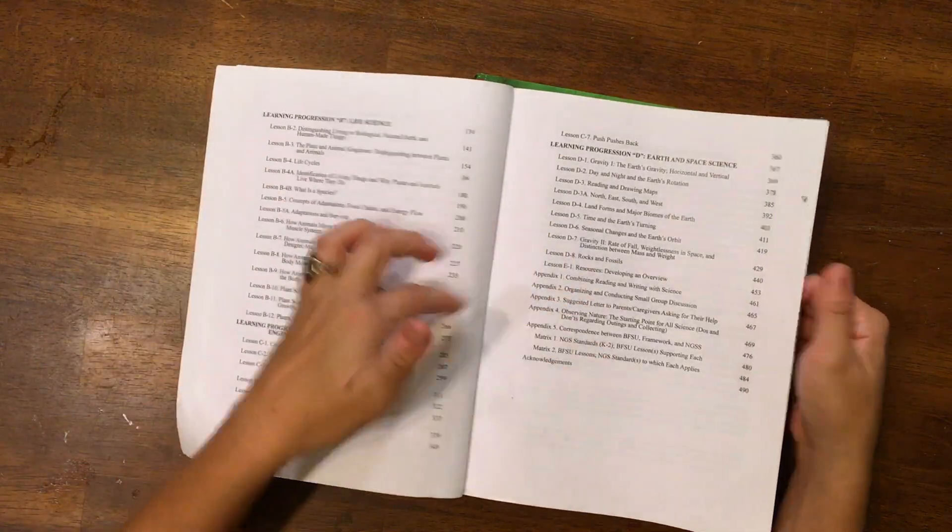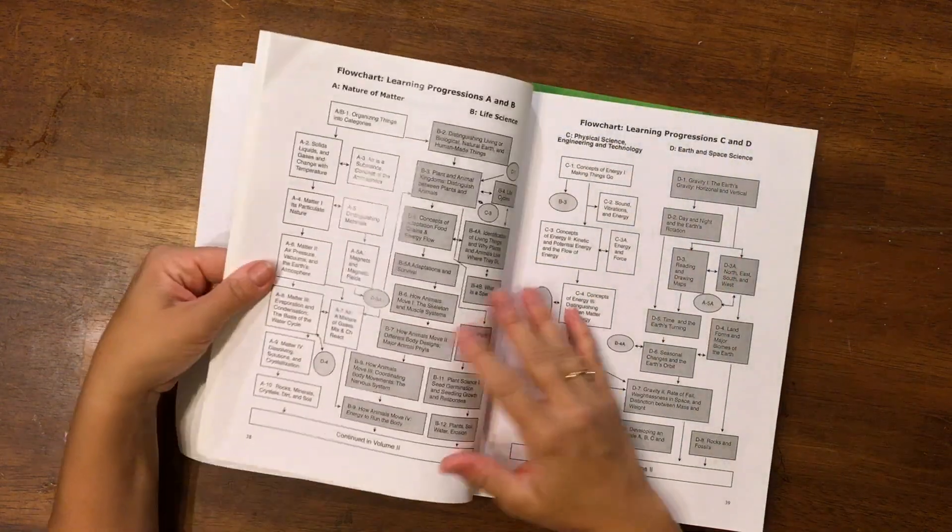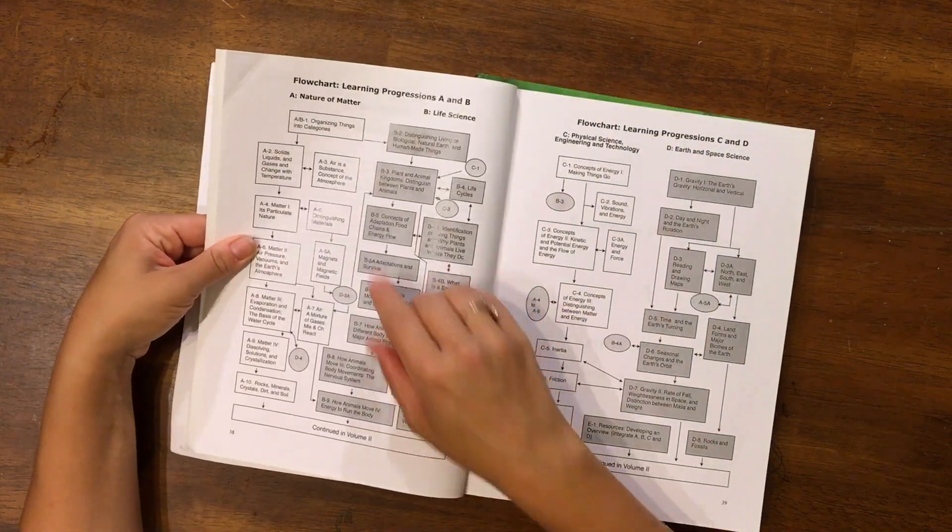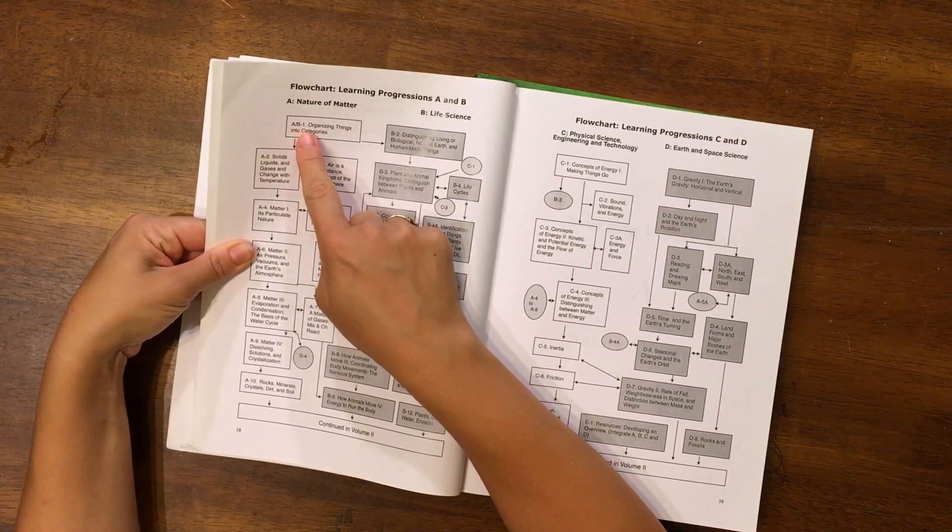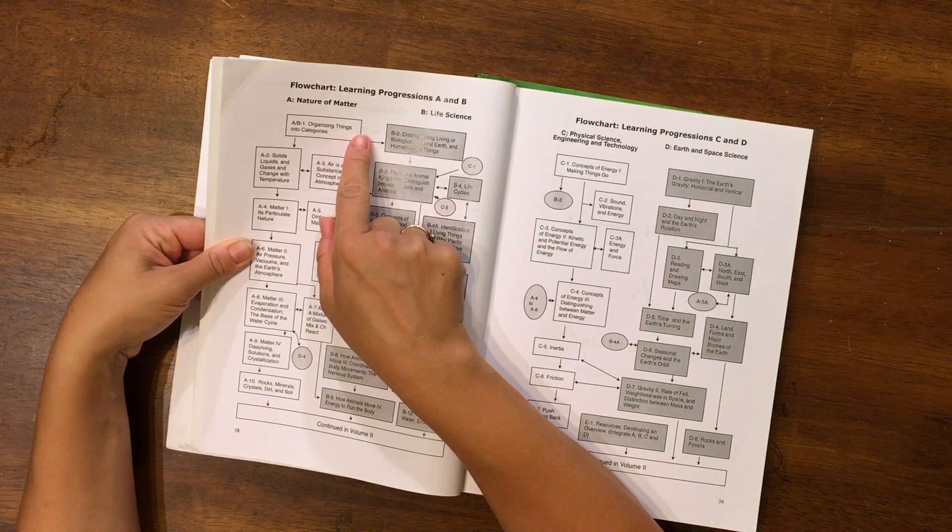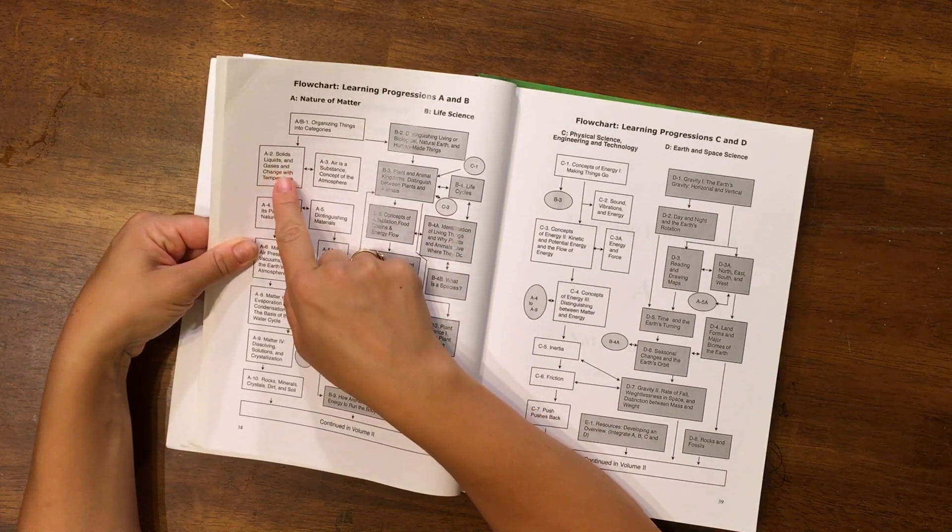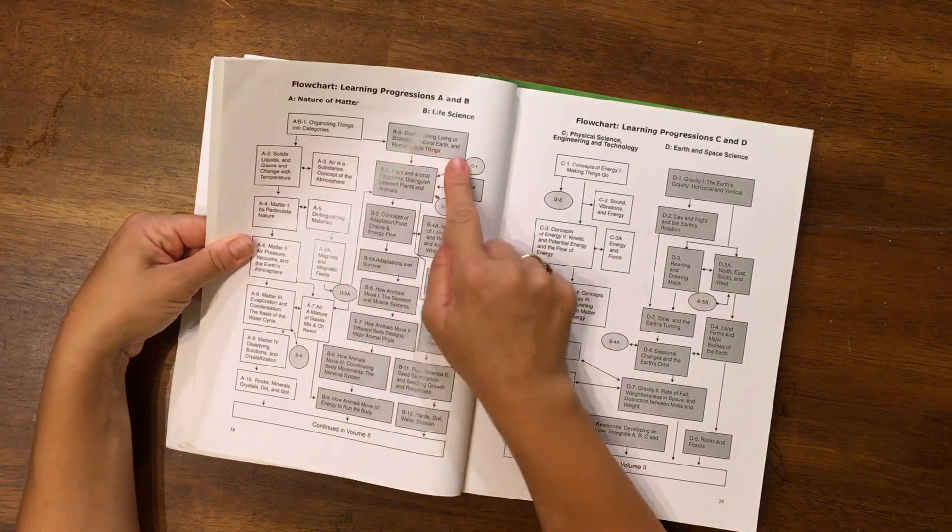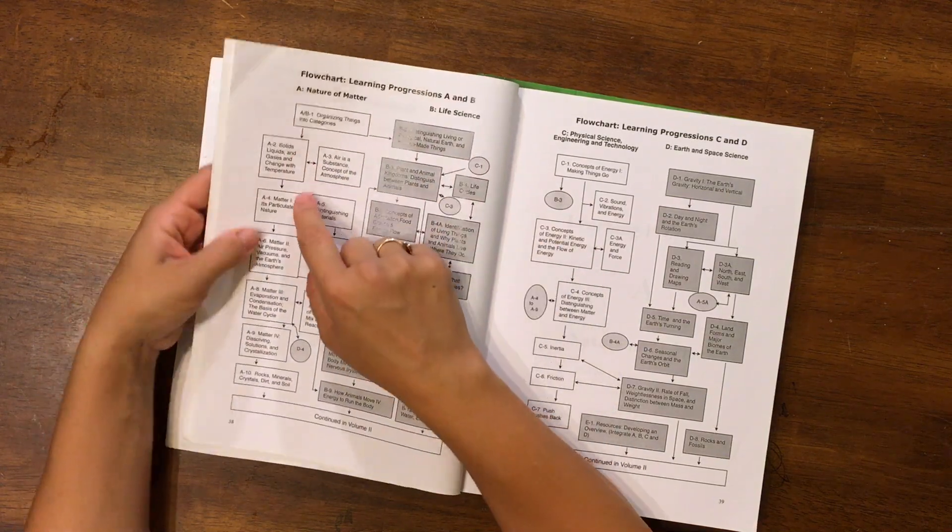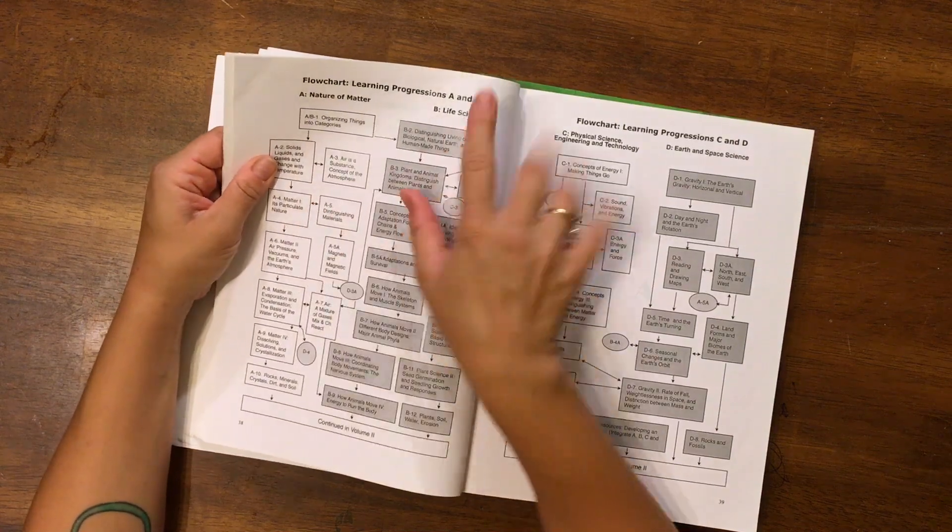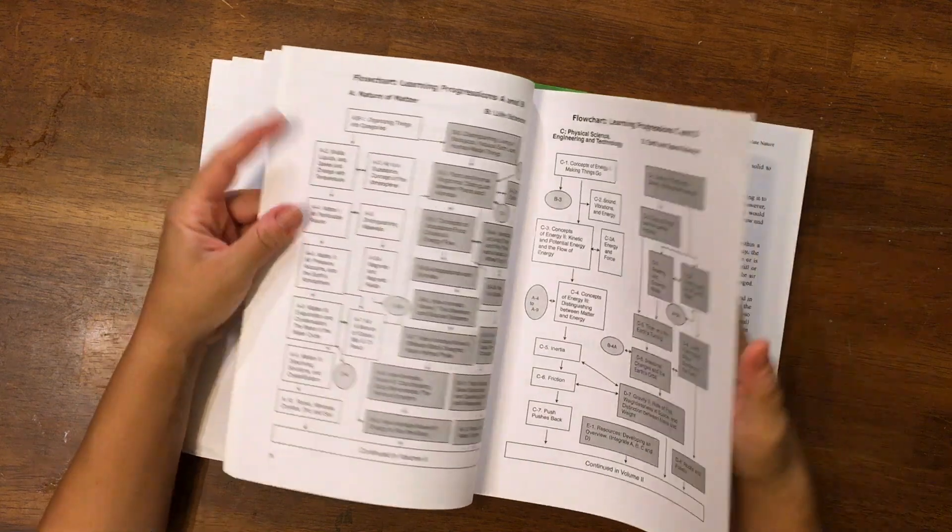Now you don't just go through each category, it jumps around. So this is how it works. You'd start with lesson A-B1, organizing things into categories, and you can either go down here to solids, liquids, gases, or you can go over here, distinguishing living or biological. So it can be really confusing.